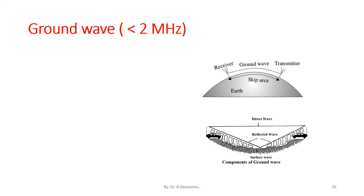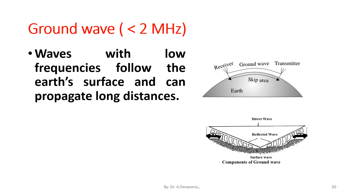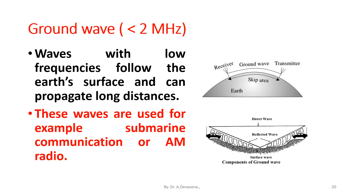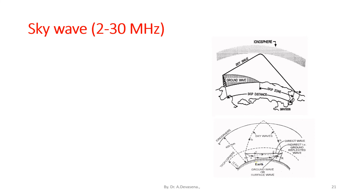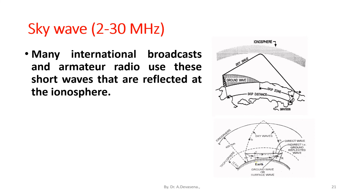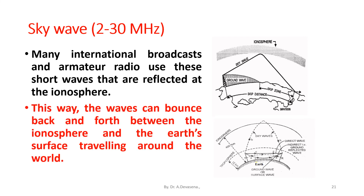Ground waves: waves with low frequencies follow the earth's surface and can propagate long distances. These waves are used for submarine communication or AM radio. Sky waves: many international broadcasts and amateur radio use these short waves that are reflected at the ionosphere. This way the waves can bounce back and forth between the ionosphere and the earth's surface, traveling around the world.